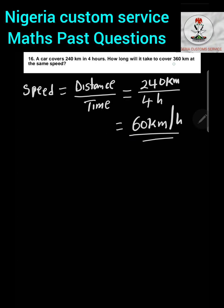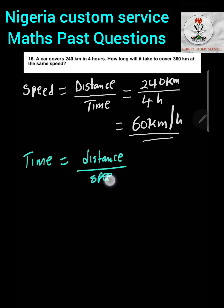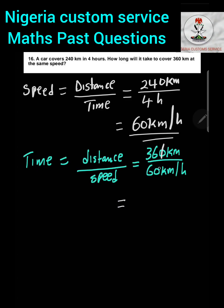We use this same speed to find how long it takes to cover 360 kilometres. The formula for time is distance divided by speed. So time equals 360 kilometres divided by 60 kilometres per hour. The kilometres cancel, giving us 6 hours. That is the time it takes to cover 360 kilometres at 60 kilometres per hour.